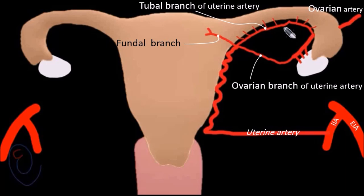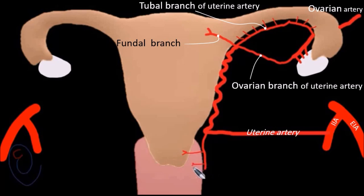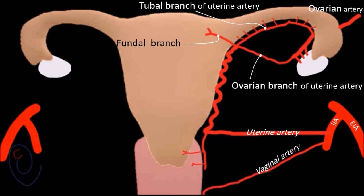Returning to the main uterine artery: at the cervico-uterine junction, it divides into a main ascending branch and a smaller branch that descends to supply the lower cervix and upper vagina. The vaginal artery is a branch of the internal iliac artery; it supplies the vagina and anastomoses with the descending branch of the uterine artery. Many branches of the uterine artery penetrate the body of the uterus to supply the myometrium and the endometrium.